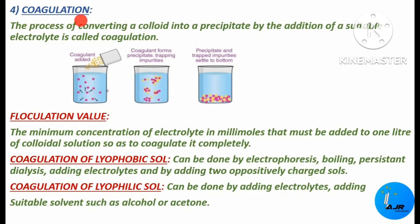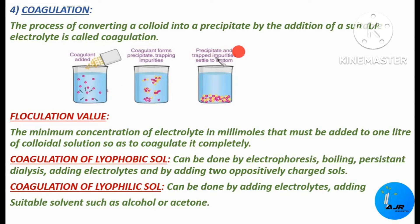The next important property is coagulation. Coagulation is the process of converting a colloid into a precipitate by the addition of a suitable electrolyte. Here, the coagulant — that is, the electrolyte — is added. The coagulant forms a precipitate by trapping the impurities. The precipitate and the trapped impurities settle at the bottom. This process is called coagulation.